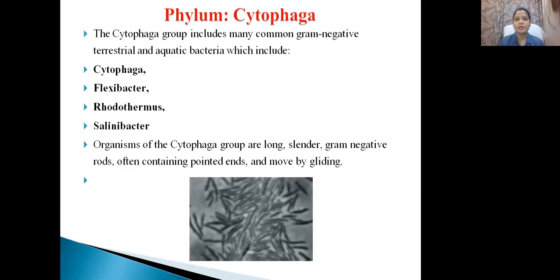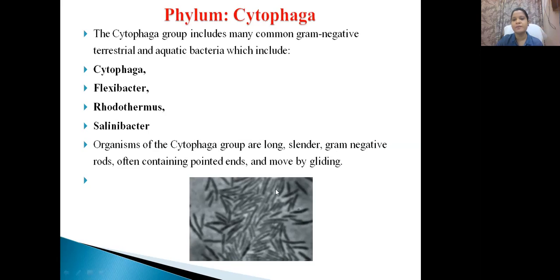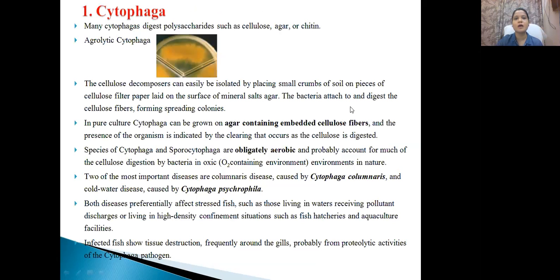The phylum Cytophaga is a group of gram-negative bacteria belonging to terrestrial or aquatic habitats. This phylum consists of 4 different genera: Cytophaga itself, Flexibacter, Rhodothermus, and Salinibacter. These 4 are long, slender, gram-negative rods often containing pointed ends. Look at the diagram — they can move by gliding motility.